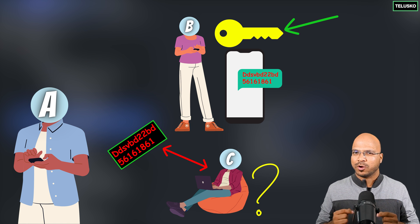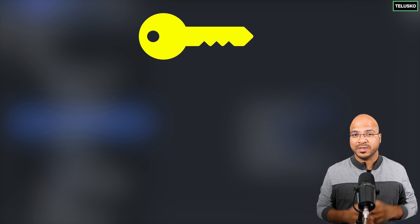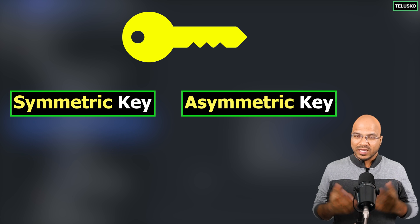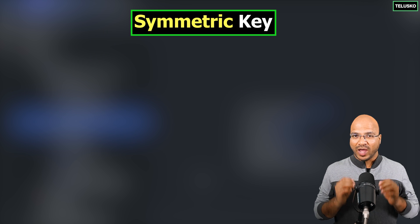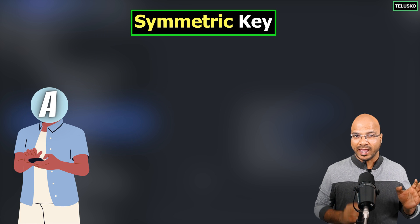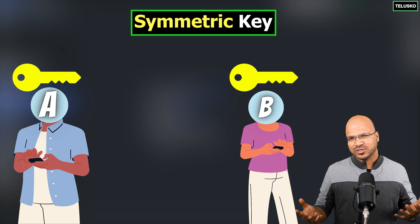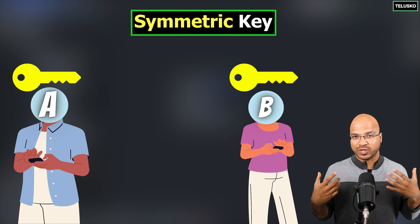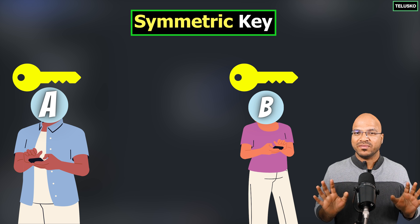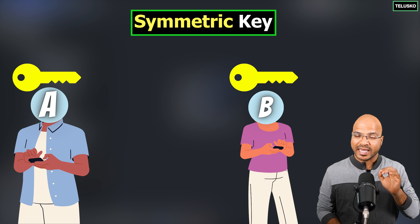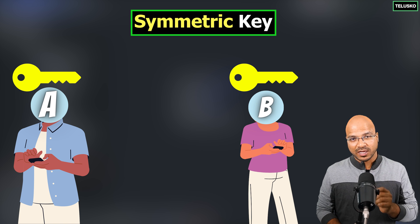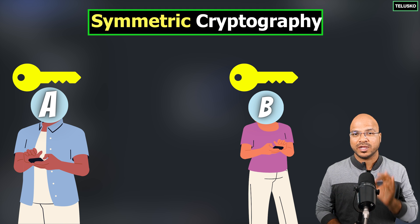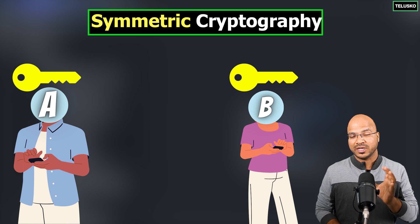The key can be of two different types: a symmetric key or an asymmetric key. In symmetric key cryptography, A and B have the same keys. It can be any string used as a key, but they will both have the same key. If A is encrypting the data with this key, the same key has to be present with B to decrypt it. That is called symmetric key cryptography.